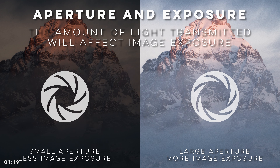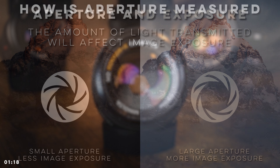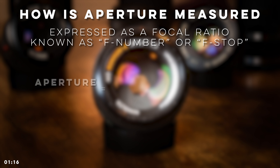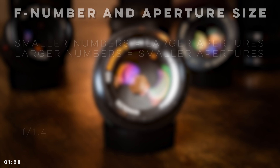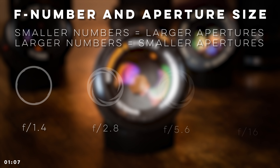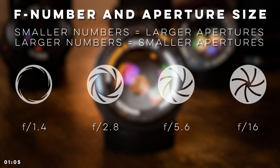The aperture of a lens is expressed as a focal ratio, which is produced by dividing the lens's focal length by the physical diameter of the entrance pupil. What is left is what is known as an F number or F stop. Smaller numbers correspond with larger apertures while larger numbers correspond with smaller apertures. This relationship between F number and aperture size is important to remember since it can seem a bit counterintuitive at first.